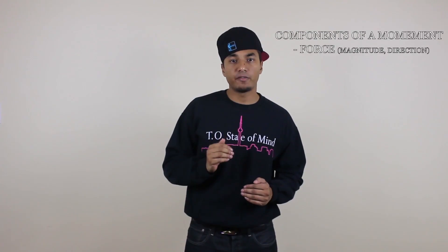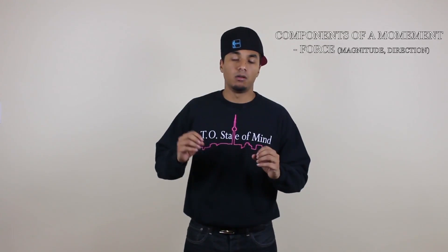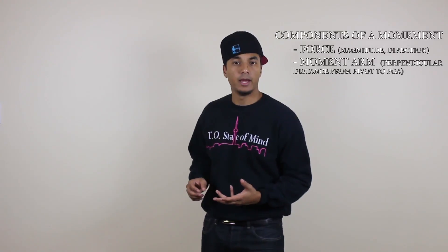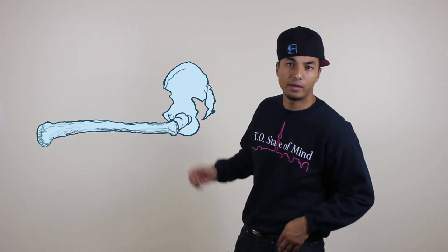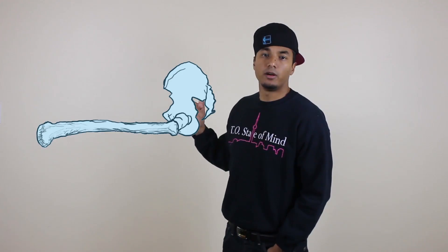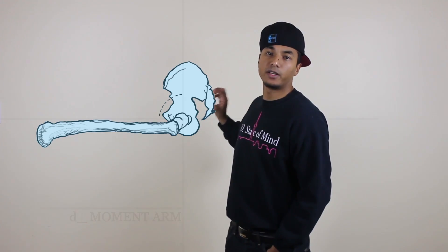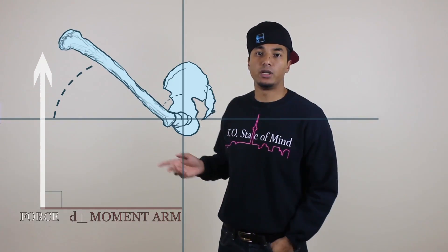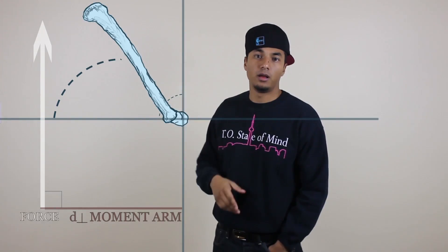Direction is extremely important, so it's always best to determine where the pivot point is. Now let's look at the components of a moment. The first is force — the force must have a magnitude and direction. Once you know the pivot point and what direction the force acts, you can determine the direction of the moment. The second component is the moment arm, defined as the perpendicular distance between the pivot point and the point of application of the force. Using the femur example, the distance between the fixed pivot point at the hip and the point of application of the force on the distal end is the moment arm, and it is perpendicular — 90 degrees — to the line of action of the force.